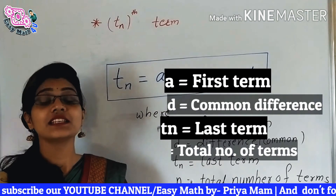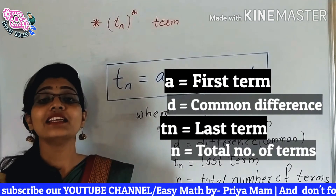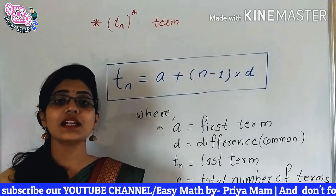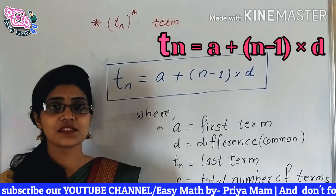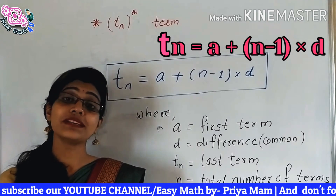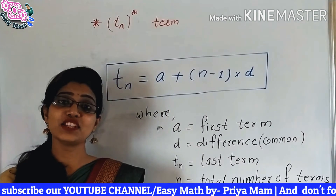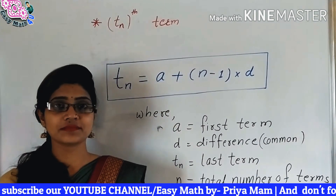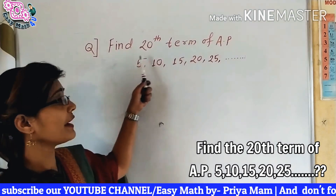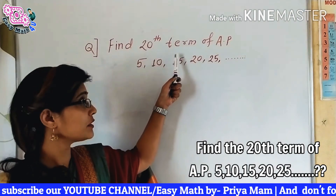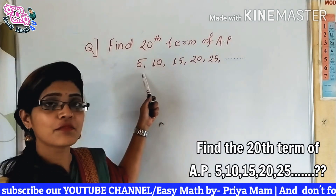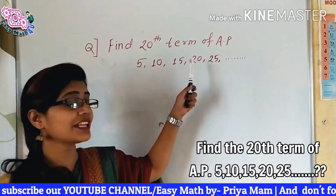And the last is n. n is the total number of terms in that particular sequence. तो चलिए देखते हैं कि आपको इस formula को किस तरह से apply करना है in your question. Question is: find the 20th term of AP, and the sequence है 5, 10, 15, 20.